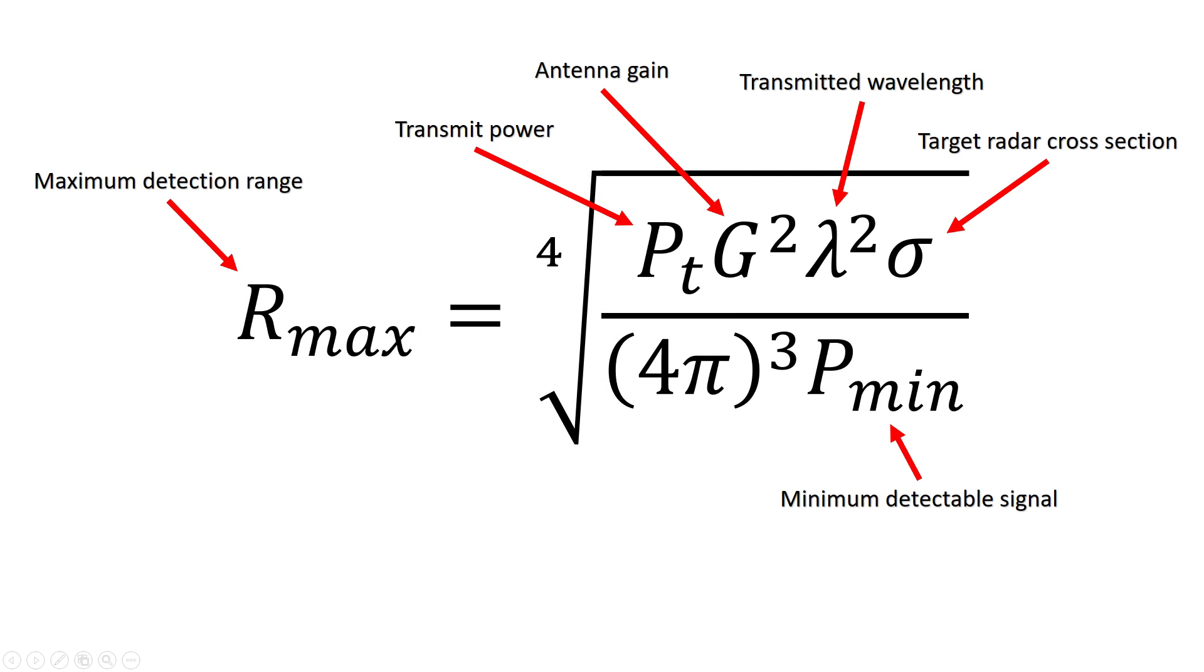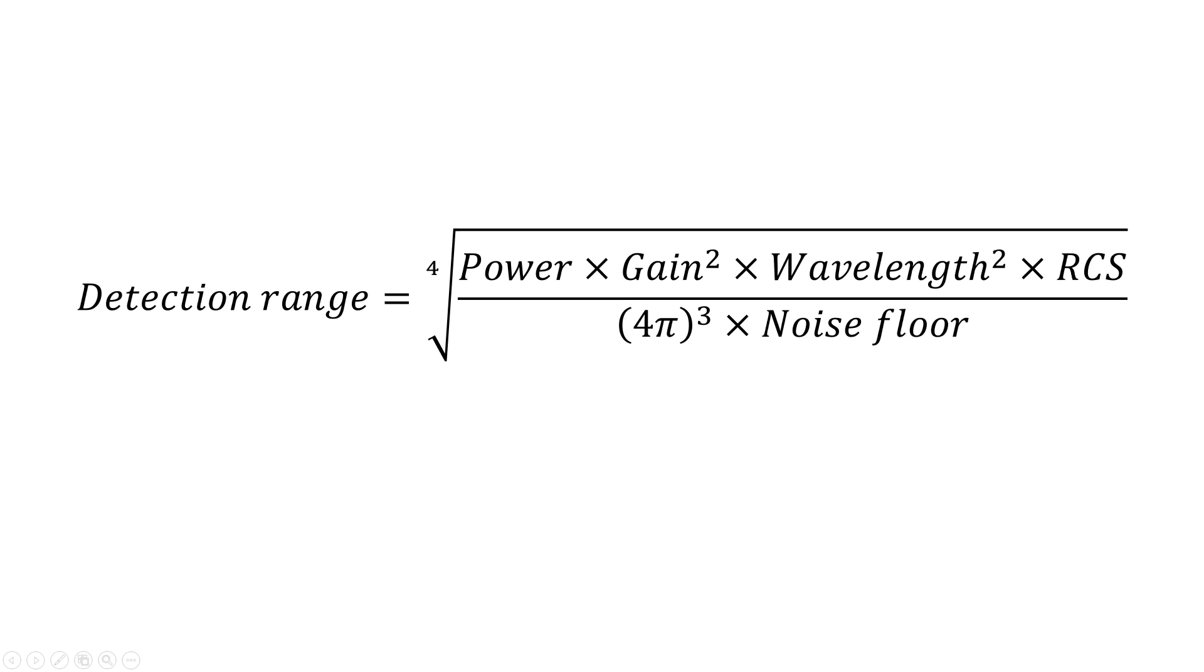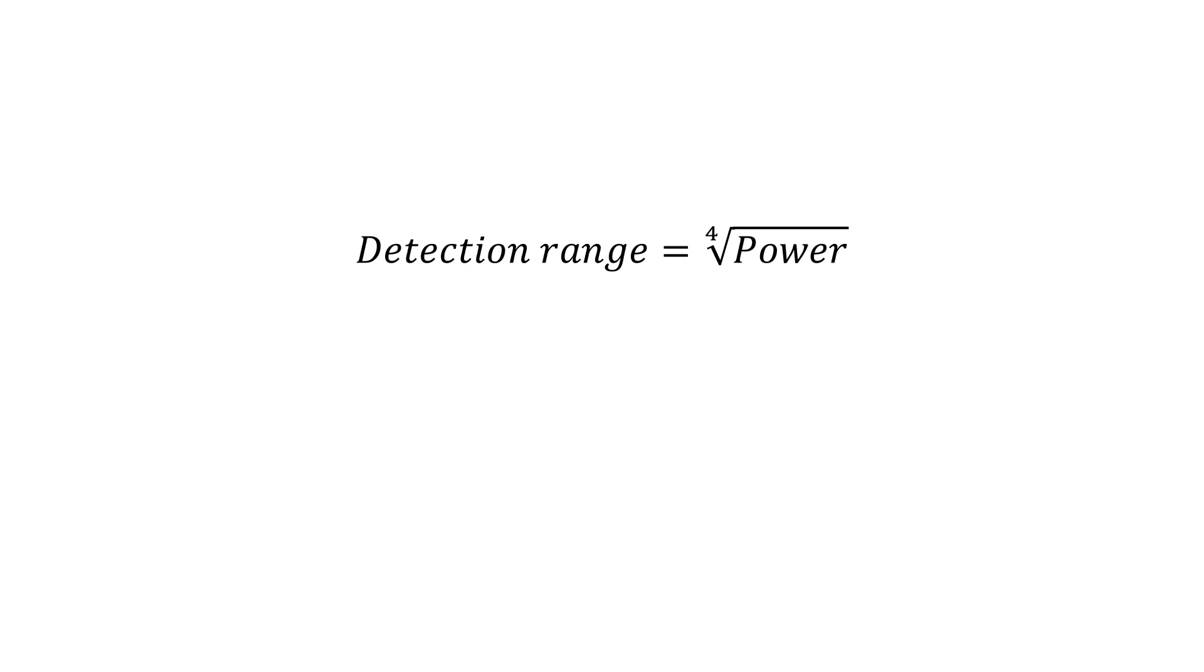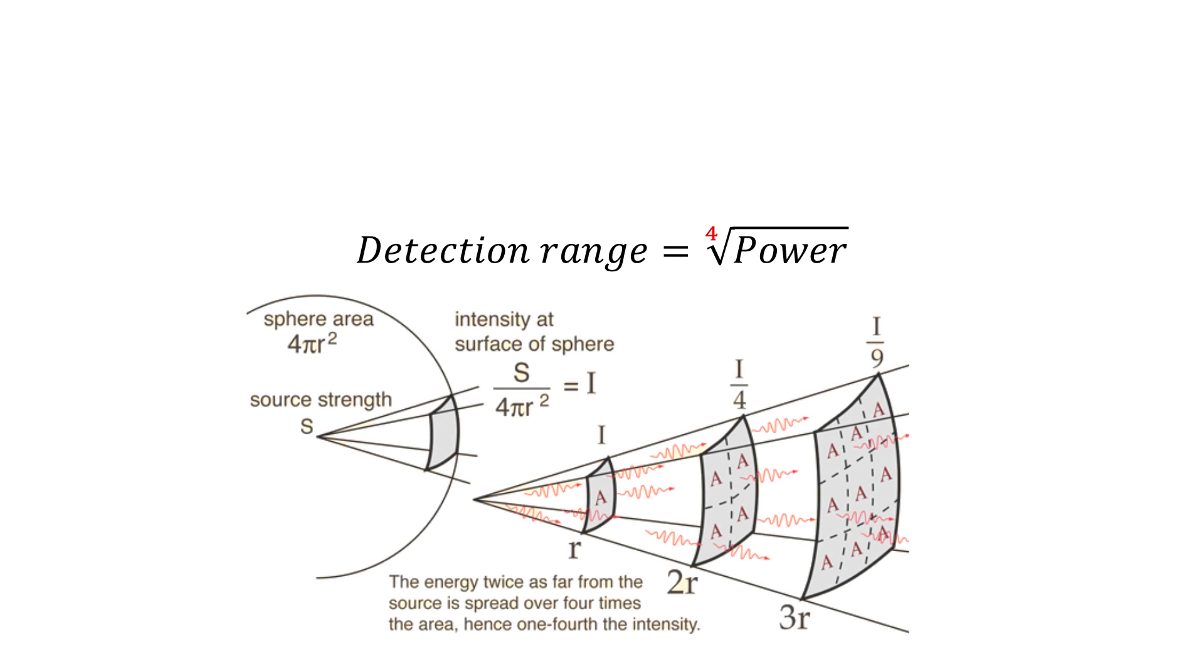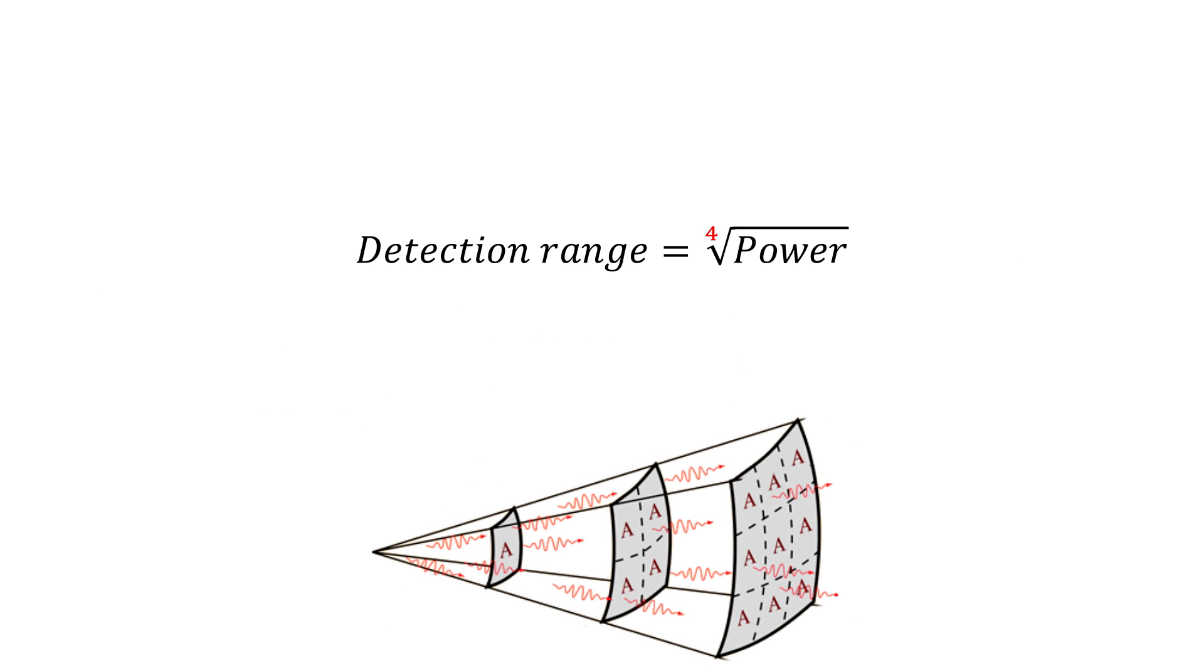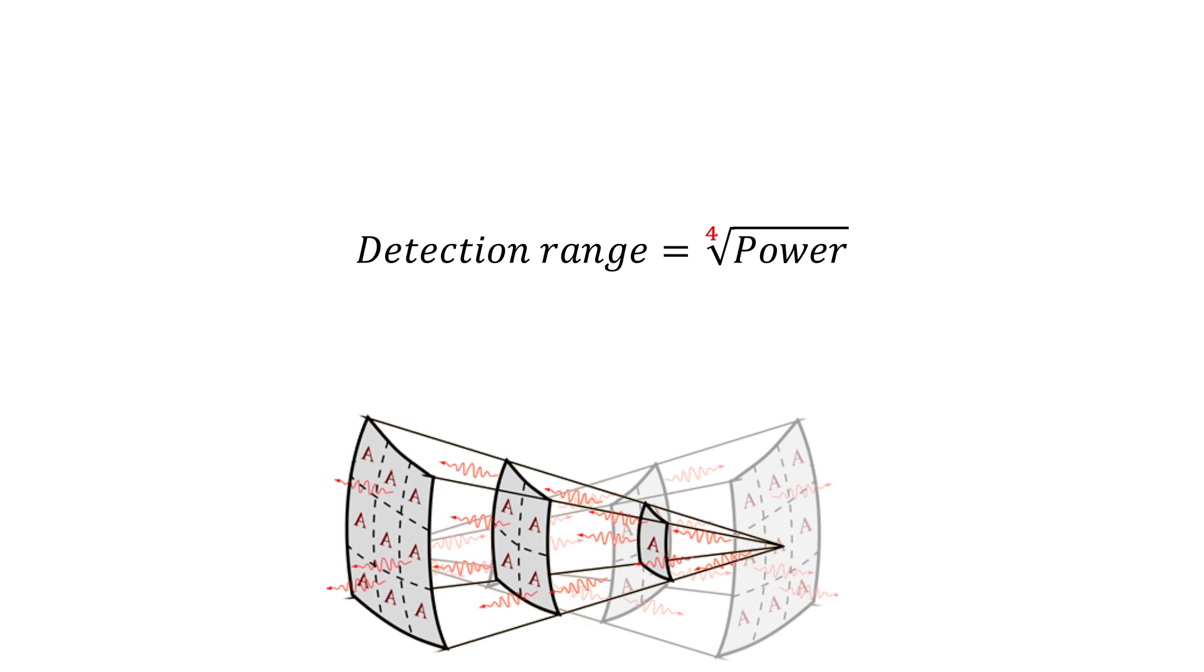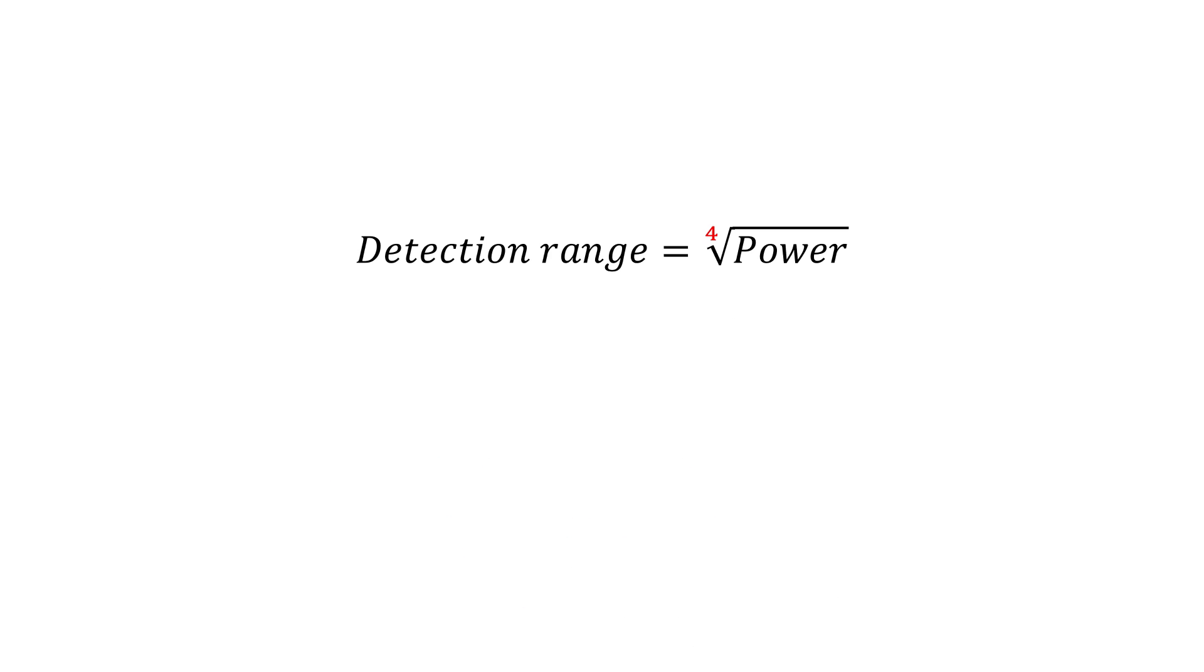Another important aspect of the radar equation is how certain factors have a greater effect than others in the detection of a target. Let's take power for example and assume that all other variables remain constant. As we can see here, the relationship between detection range and power is to the fourth root. This is due to the inverse square law and the fact that a radar pulse experiences this law twice: once on the way to the target and again on the return trip back to the radar. This relationship also means that you must increase power significantly to have a minor increase in detection range.